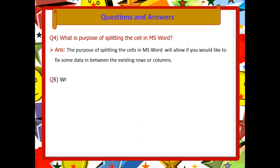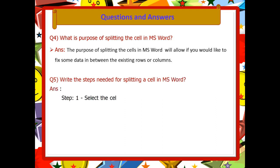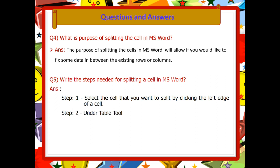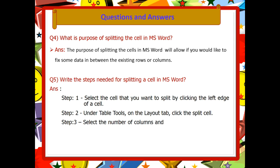Question 4: What is the purpose of splitting the cells in MS Word? The purpose of splitting cells in MS Word is to allow you to fix some data in between the existing rows or columns. Question 5: Write the steps for splitting a cell. Select the cell that you want to split by clicking the left edge of a cell. Under Table Tools on the Layout tab, click Split Cell. Then select the number of columns and rows that you need from the dialog box.